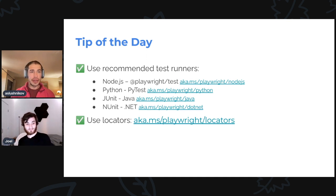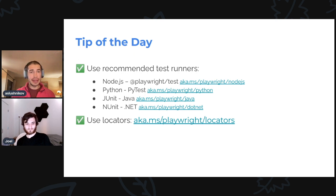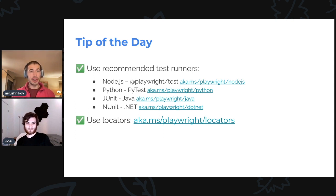But before we actually go to the new stuff, I want to use this screen time opportunity to share a tip of the day. And today, we have two tips. The first one is to use the recommended test runners. There are different options depending on the language and the ecosystem you are living in. For Node.js, we have our very own Playwright test. For Python, we have a set of our own PyTest fixtures. For Java and .NET, we recommend using JUnit and NUnit, respectively.